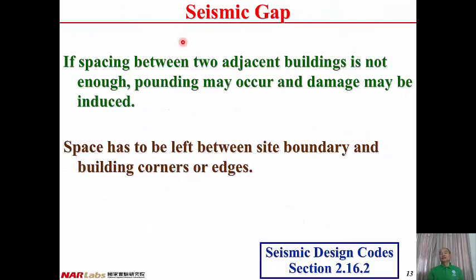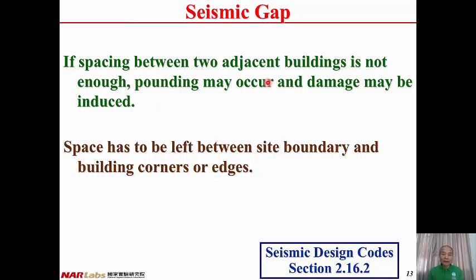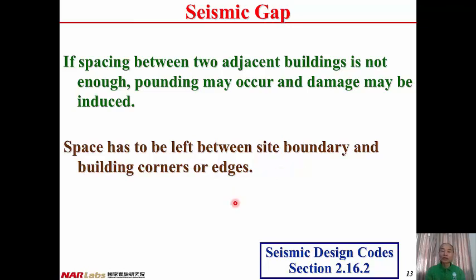Seismic gap: if two buildings are too close to each other, under earthquakes pounding may occur and damage may be induced. Therefore, the spacing between two adjacent buildings must be specified. Space has to be left between the site boundary and the building corners or edges in order to prevent pounding of two adjacent buildings.